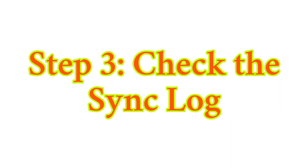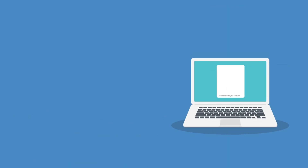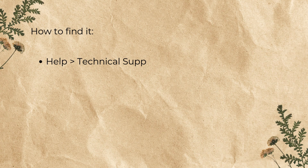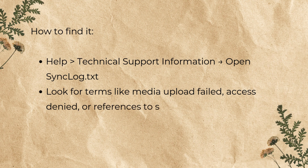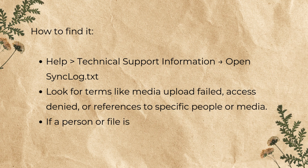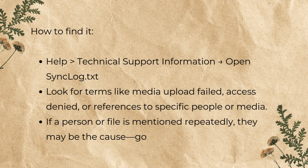Step 3: Check the sync log. FTM keeps a behind-the-scenes record of what failed and why. To find it, go to Help > Technical Support Information > Open sync log.txt. Look for terms like 'media upload failed,' 'access denied,' or references to specific people or media. If a person or file is mentioned repeatedly, they may be the cause — go inspect them in your tree.